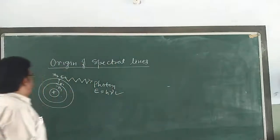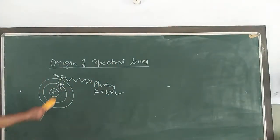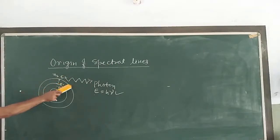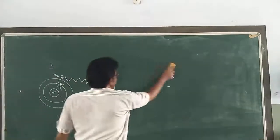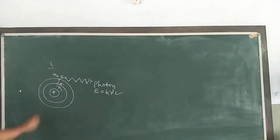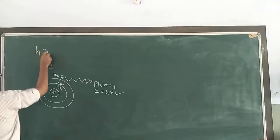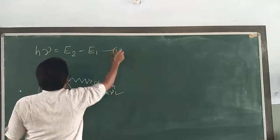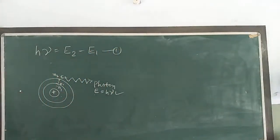So when an electron jumps from an outer to an inner orbit, the energy of radiation emitted, according to Bohr's third postulate, is hν = E2 − E1. This is our equation number 1.